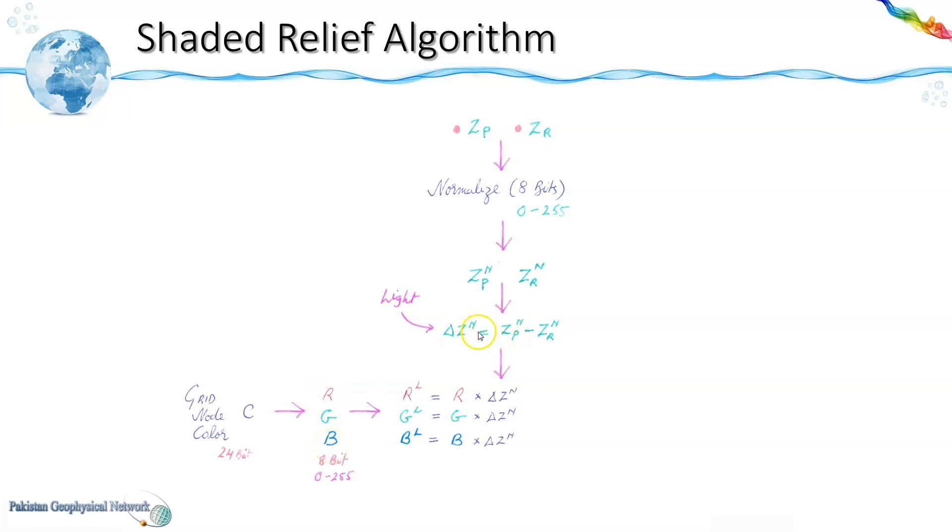Now this r, g, b were 8 bit numbers. Similarly del z was also an 8 bit number but when we multiply them their values exceed the 8 bit range. Now in order to normalize them we again multiply them with these terms.